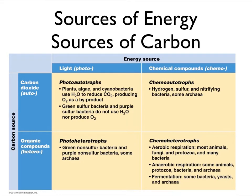If you get your energy from chemicals and get your organic carbon from organic carbon that you find and incorporate — probably through eating — you are a chemoheterotroph. I am a chemoheterotroph, and pretty sure you are as well. So are all animals, most fungi, lots of protozoa, and many bacteria like E. coli. It means you're getting your energy from organic carbon like glucose or sugar, taking some of it for energy and incorporating the rest into your body.